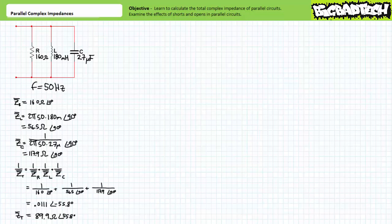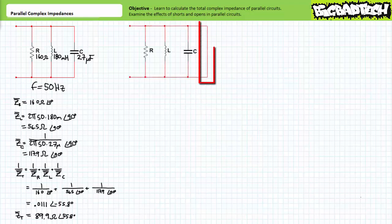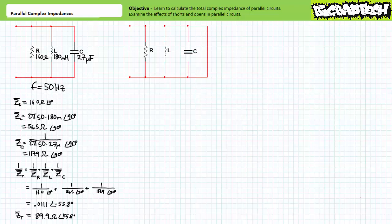Ordinarily, when connected in the following fashion, this parallel relationship would represent a total impedance of roughly 89.9 ohms at an angle of positive 55.8 degrees. If, however, a short in the form of a zero ohm resistive wire was placed across the terminals of the parallel relationship or any single element within it, the short effectively acts like the addition of yet another path in parallel with zero ohm impedance magnitude. As such, the total impedance of the shorted parallel relationship drops to zero ohms because the short routes all current around the parallel relationship.